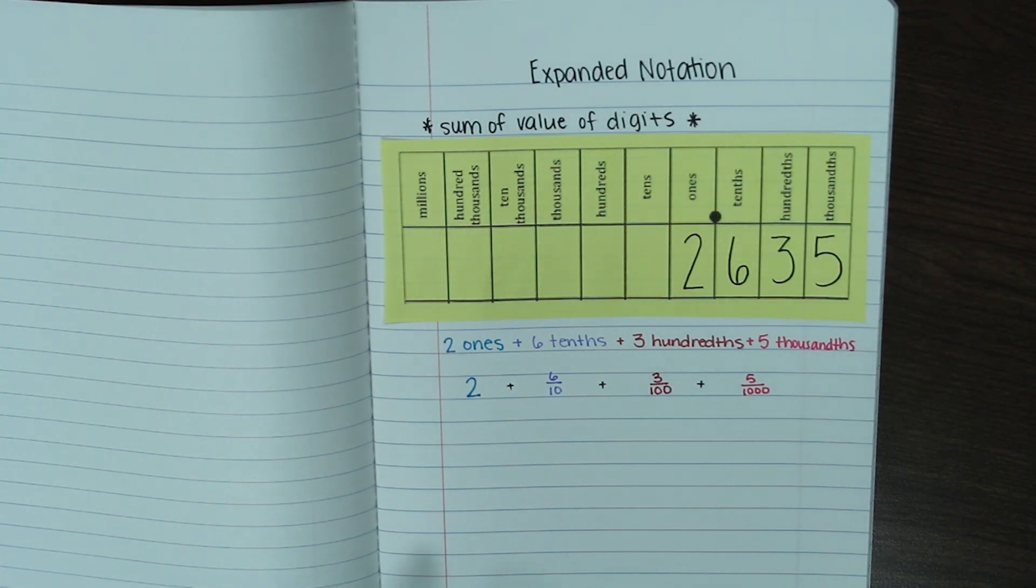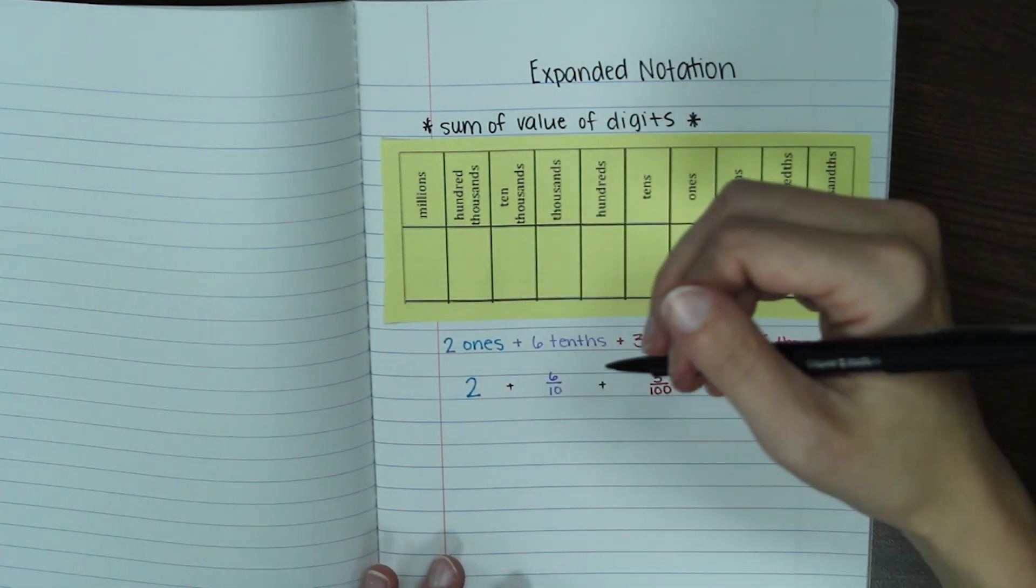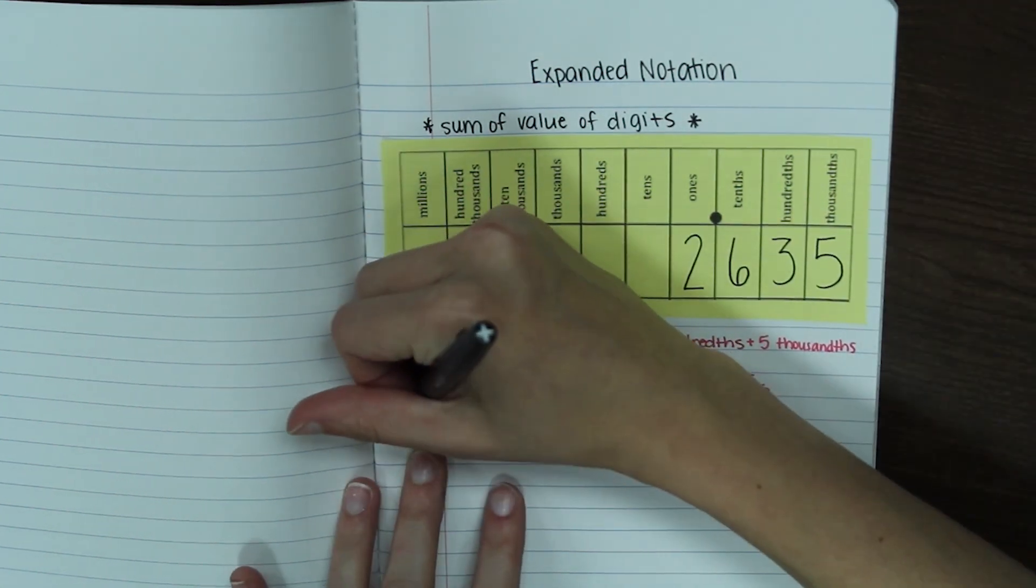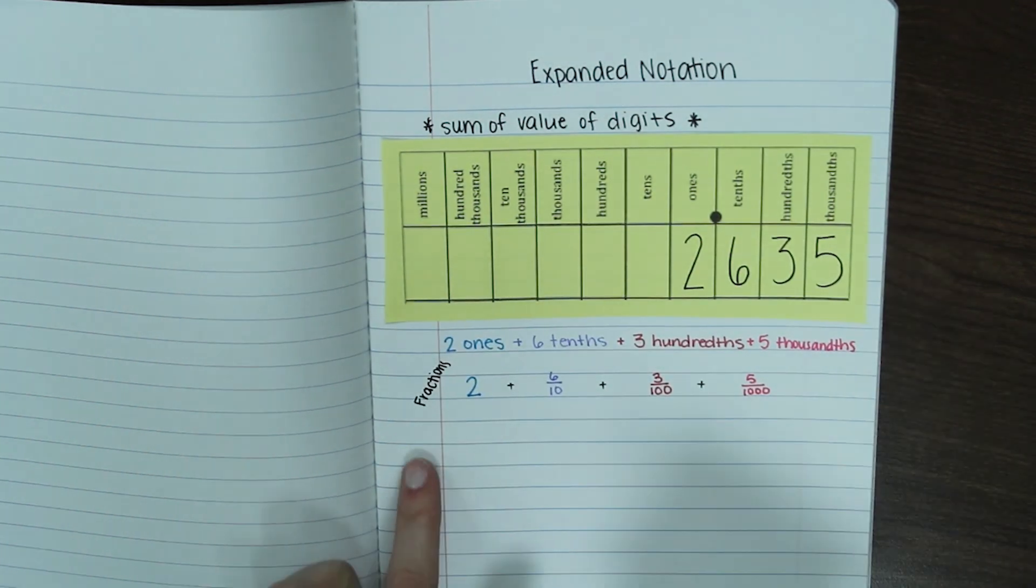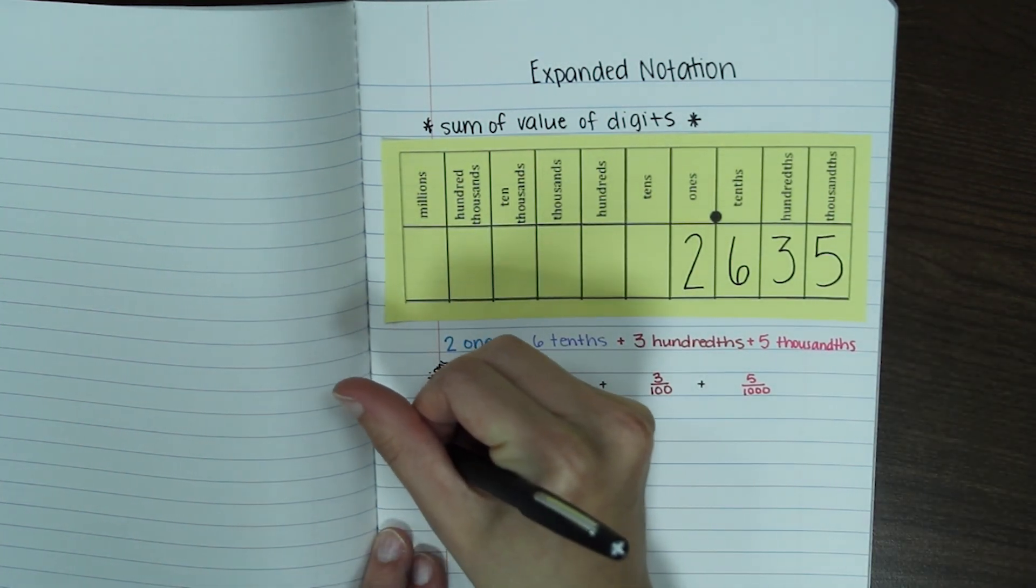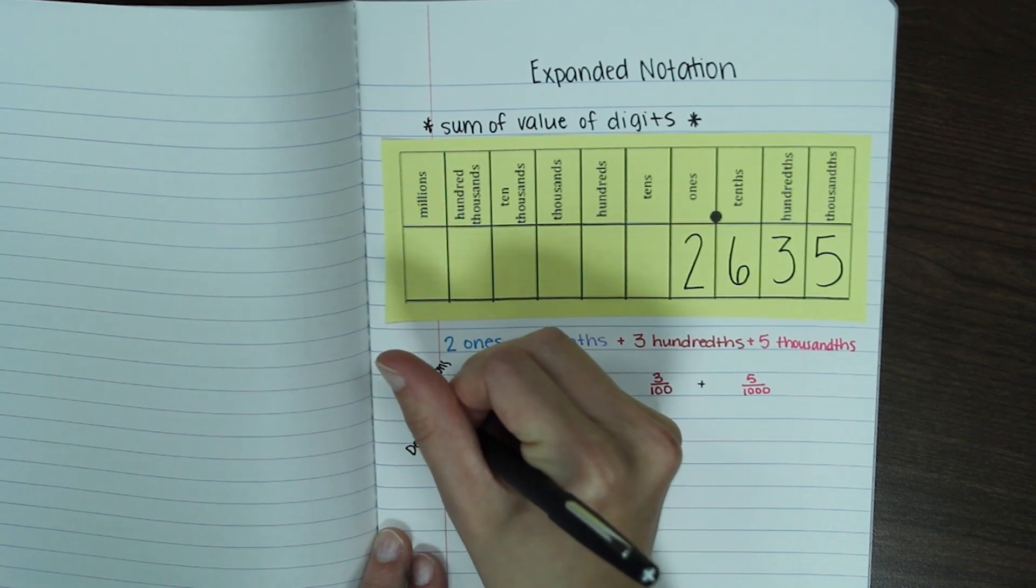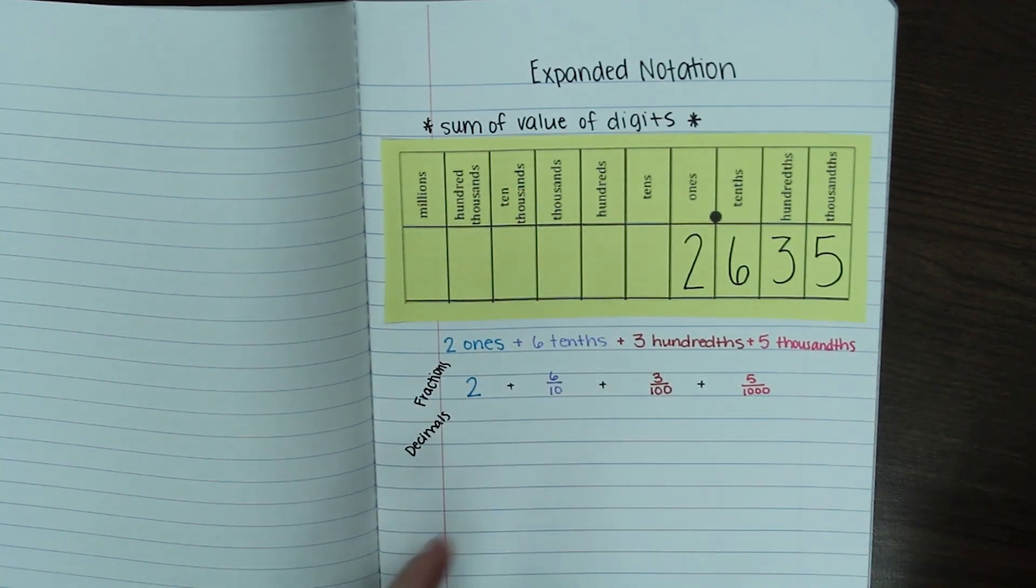Now we can do the same thing with decimals. So I'll label these right here that we wrote them as fractions. And let's do the same thing on the next line, writing each one as a decimal. So two is still a two.